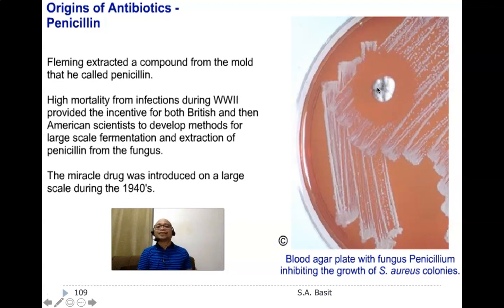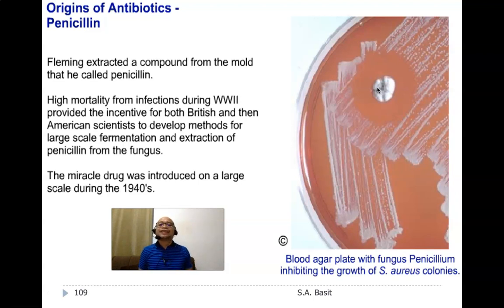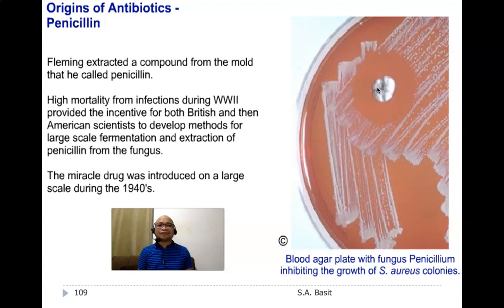Fleming extracted the compound from the mold and called it penicillin. High mortality from infections during the Second World War provided the incentive for British and American scientists to develop methods for large-scale fermentation and extraction of penicillin from the mold. This miracle drug was introduced on a large scale during the 1940s. Unfortunately, because of the indiscriminate use of antibiotics, many microorganisms have developed resistance against penicillin.